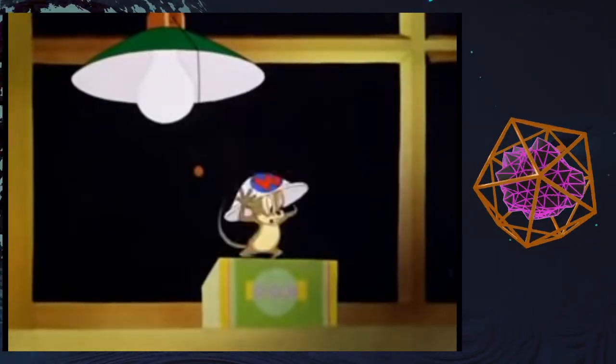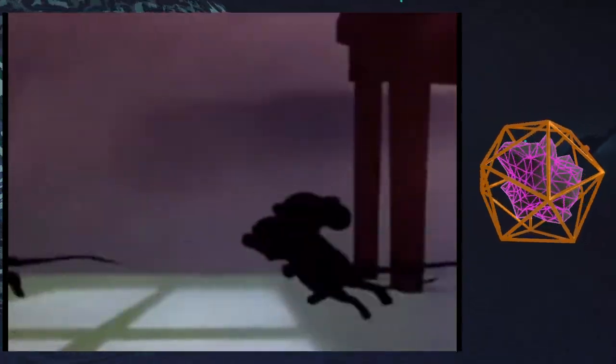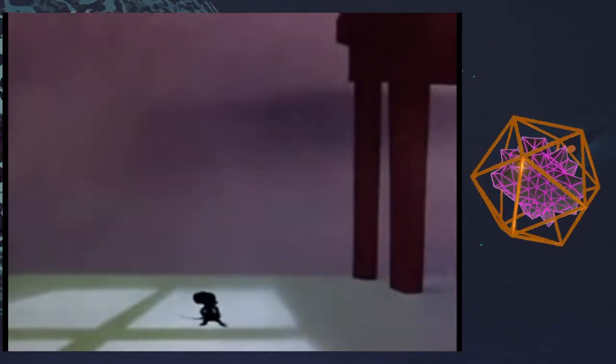So of course the mice already understand the black cat is a clear and obvious threat to them, so they all scatter and run back to their hole in the wall.